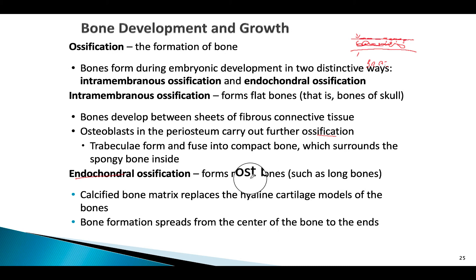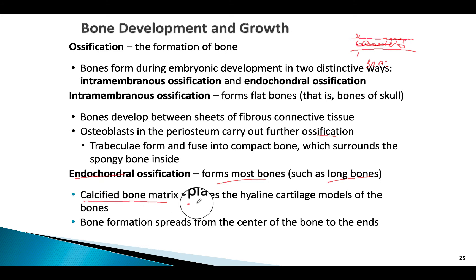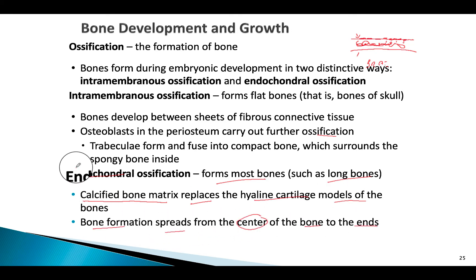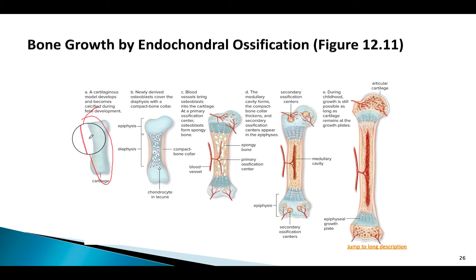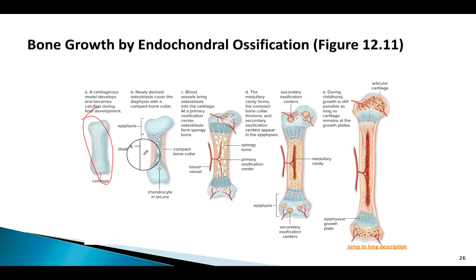Endochondral ossification forms most bones in the body, such as long bones. Here, a calcified bone matrix replaces hyaline cartilage models — essentially creating a cartilage mold first before it becomes calcified. Bone formation spreads from the center of the bone outward to the ends. The cartilage serves as the initial mold for the long bone, with ossification beginning at the center.